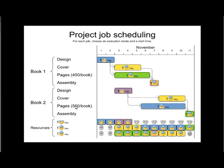You'd expect Book Two could be done in eight days — one day longer than Book One — and that is indeed the critical path. But the problem is our resources are limited. We have one designer and two workers available. As soon as Book One starts, the designer is unavailable for days one and two, so Book Two can only start on day three, giving us two days of delay right away.